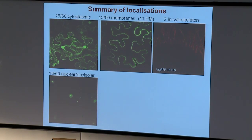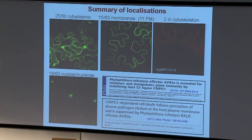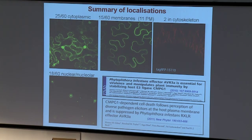One of the cytoplasmic effectors is AVR3A, and we've looked at that in a bit more detail. AVR3A interacts with a ubiquitin E3 ligase in the plant called CMPG1 and prevents its normal function. CMPG1 is required for cell death in response to perception of a range of different elicitors from different pathogens, and AVR3A is able to suppress the cell death in all cases.